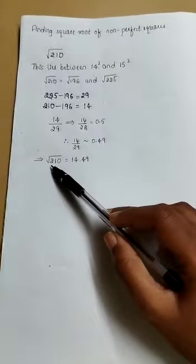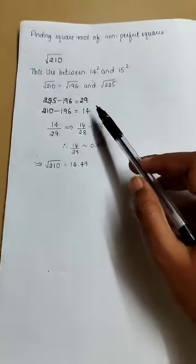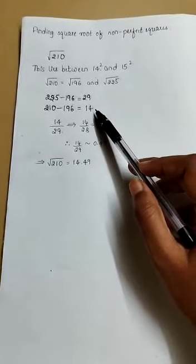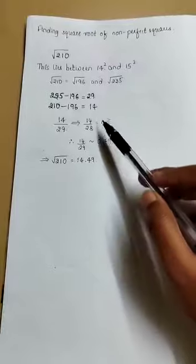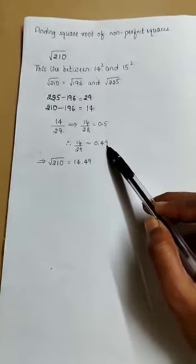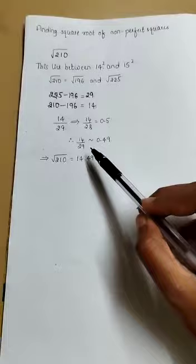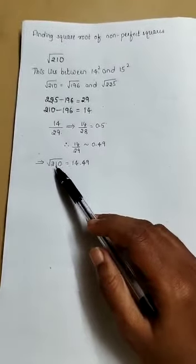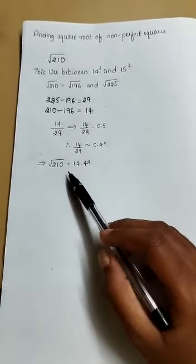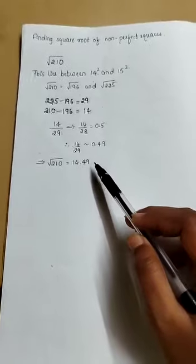Therefore, the final answer for the root of 210 uses the first number and the quotient obtained from dividing the two differences. The root of 210 is equal to 14.49.